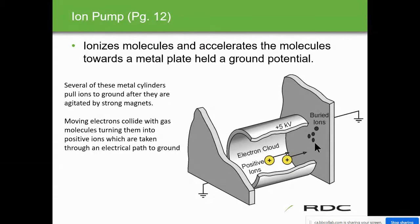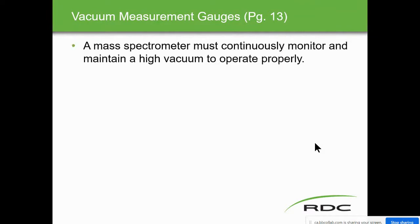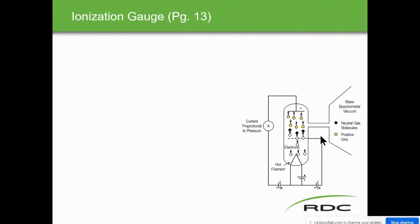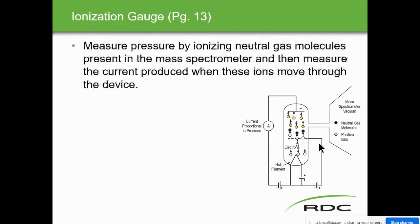The ion pump has no moving parts. It uses positively charged ions — ionized molecules accelerate toward a metal plate held at ground potential. With 5 kV applied, an electron cloud and positive ions all bleed to ground. Several metal cylinders pull ions to ground after they are agitated by strong magnets. Moving electrons collide with gas molecules, turning them into positive ions, which are taken through the electrical path to ground.